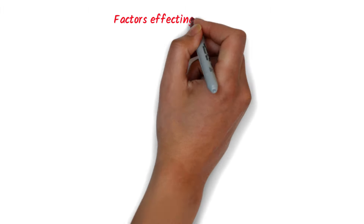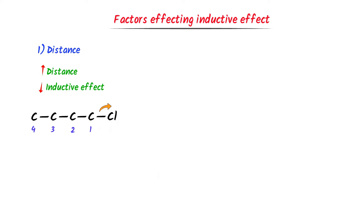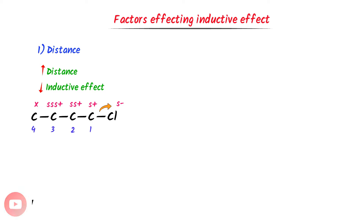Now let me teach you the factors affecting inductive effect. The first factor is distance. When the distance increases, inductive effect decreases. For example, consider this compound with first, second, third, and fourth carbon. Chlorine attracts the shared pair of electrons towards itself, so a partially negative charge appears on chlorine and a partially positive charge appears on the chain. The second carbon is further from chlorine, so less positive charge appears on it. The third carbon is even further, so very little positive charge appears. The inductive effect on the fourth carbon is negligible. Thus, inductive effect decreases when distance increases.